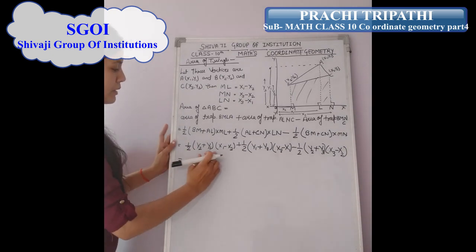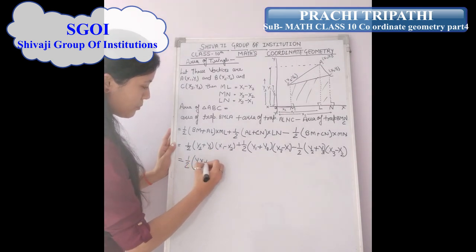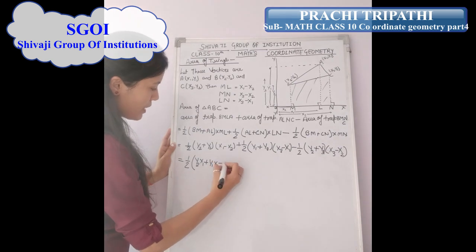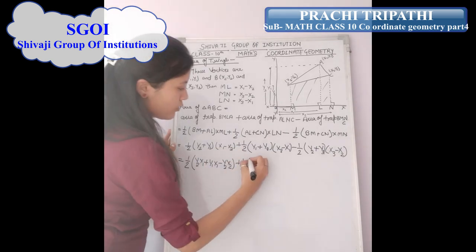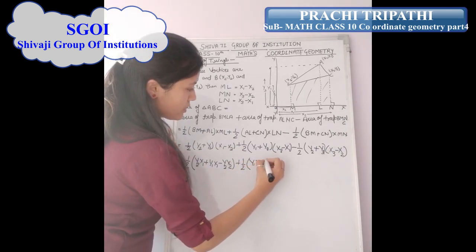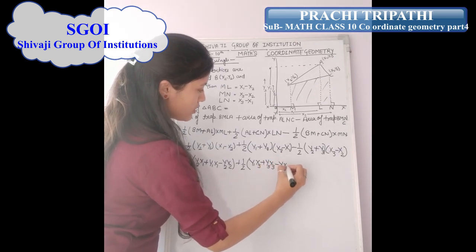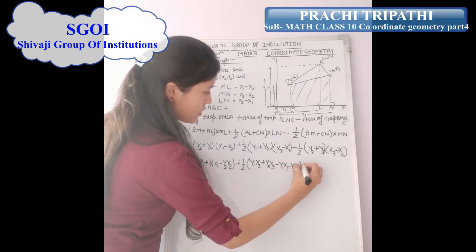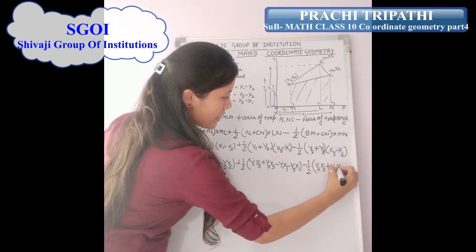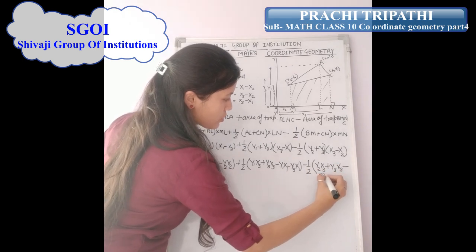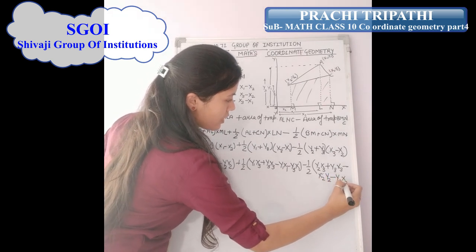After multiplying this out, we get 1/2 times [y2·x1 + y1·x1 minus y2·x2] plus 1/2 times [y1·x3 + y3·x3 minus y1·x1 minus y3·x1] minus 1/2 times [y2·x3 + y3·x3 minus x2·y2 minus y3·x2].